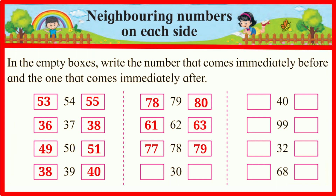30 — the number before 30 is 29, and the number after 30 is 31. 99 — the number before 99 is 98, and the number after 99 is 100. 32 — the number before 32 is 31, and the number after 32 is 33.